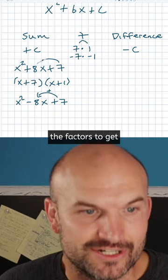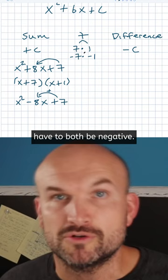So I'm going to be adding the factors to get to my middle term. But since my middle term now is negative, I know my two factors have to both be negative, right?